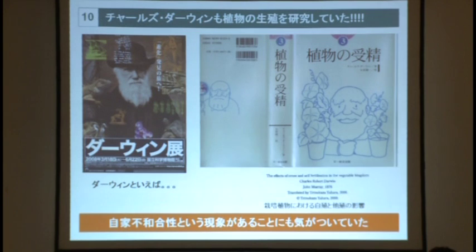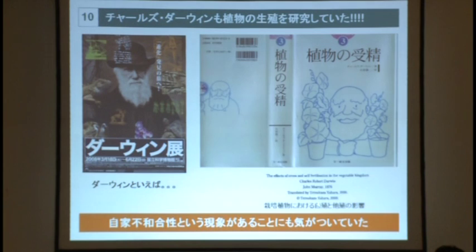ある種探検家のように、彼のことを思っているかもしれませんが、実は彼は探検家ではなくてですね、植物の受精という本の、この訳本なんですが、1876年に、The Effect of Cross and Self-Fertilization in the Vegetable Kingdom、栽培植物における自食と多食の影響という形で、栽培している作物ですね、その作物で自分の花粉をかけたときと他人の花粉をかけたときにどういう影響が出るかということを、ものすごい大量の実験をやっています。